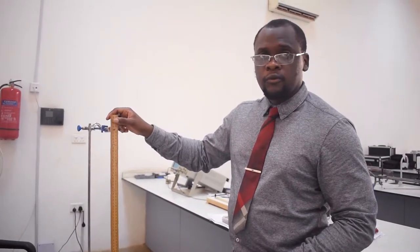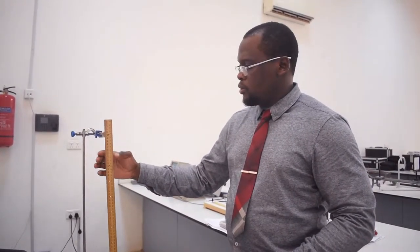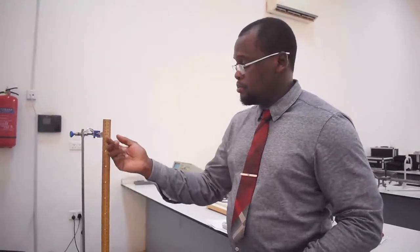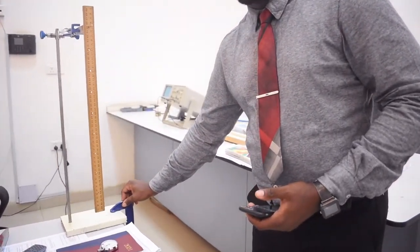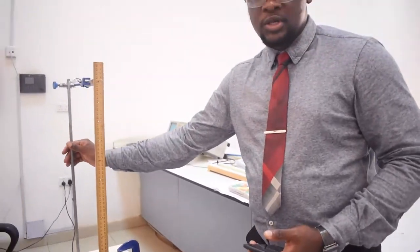This is an experiment setup for compound pendulum. The required apparatus for the experiment is the pin, the meter rule, the stopwatch, and the G-clamp and the retort stand.